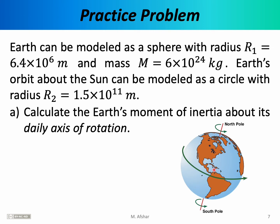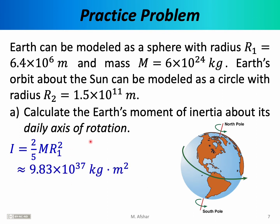To calculate the Earth's moment of inertia about this axis, we look up the formula for the moment of inertia of a sphere in our book and find it is 2/5 mr². Substituting the numbers in, we find that its moment of inertia is approximately 9.83 × 10³⁷ kg·m².